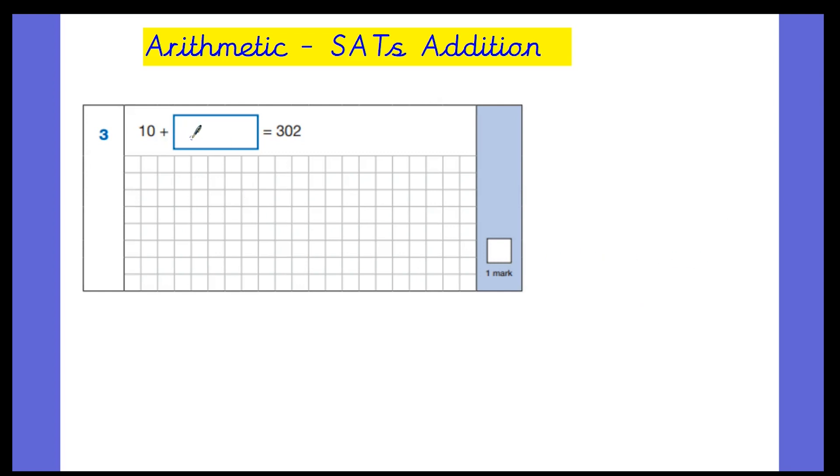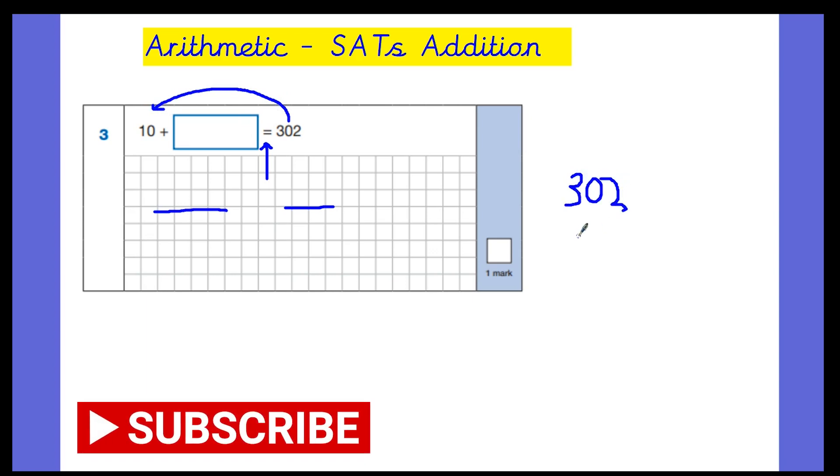So we've got 10 + something = 302. So what we want to look at here is the equal sign. Now what I say to the children in my class is the equal sign is like a balanced scale. Whatever is on this side must equal this side. So 302 on this side, this side must equal 302. So something add 10 equals 302. Now what you can do here is do the inverse. So take 10 away from 302. So actually this, you might say this is a subtraction question also.